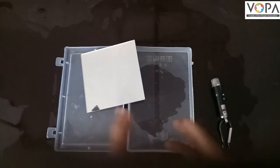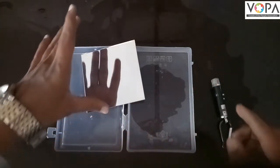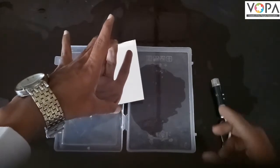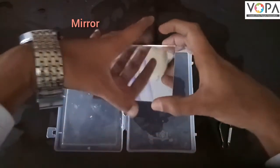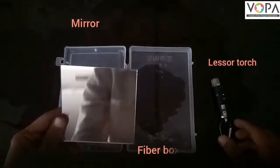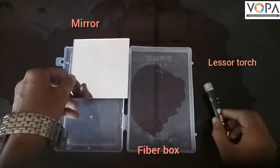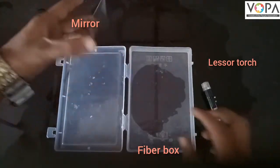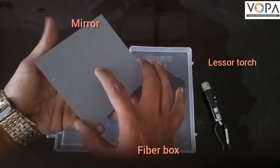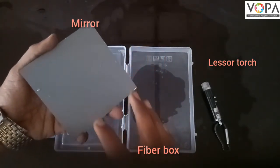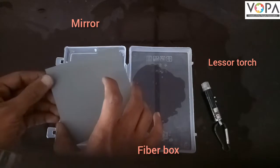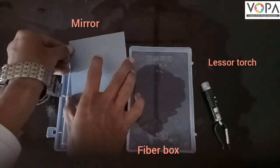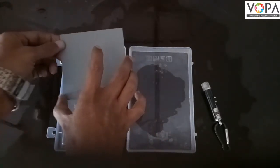To understand regular and irregular reflection of light, let's do an experiment. For smooth surface we will use a mirror and a torch. And for rough surface we will use this rough surface. Let's begin the experiment.